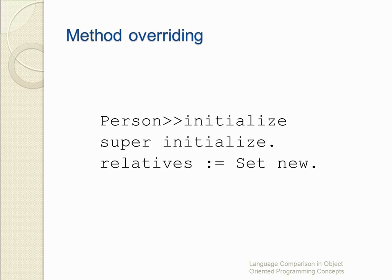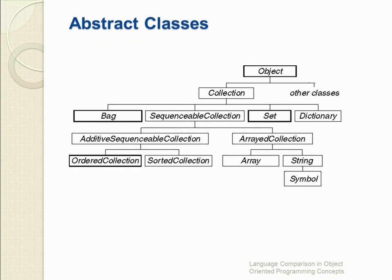Now let's move on to abstract classes. Abstract classes provide behavior across a set of subclasses, but they will never have their own instances. There are two types of methods that abstract classes provide. The first type provides a complete method that a subclass inherits. The second type provides a method interface that is common to all subclasses but contains no code. The figure shown in the slide indicates abstract classes as a shaded block.